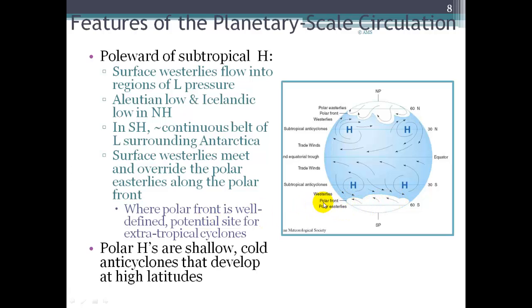In these areas where the polar front is well defined, we get storm track. This is a common storm track. We watch this in the winter months especially to deliver strong winter storms to the United States. The polar highs that sit on top of the caps are very shallow anticyclones that just sit at the poles and actually keep the weather pretty sunny and dry right up there at the pole.